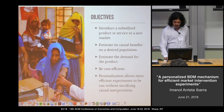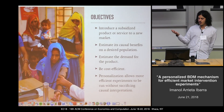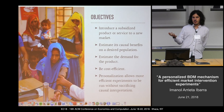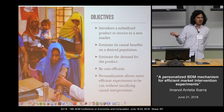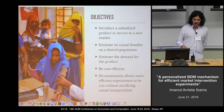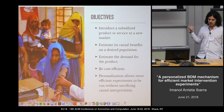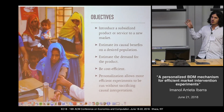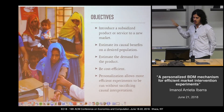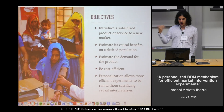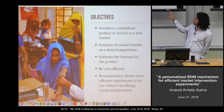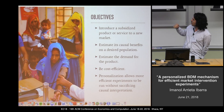Imagine that you want to introduce a subsidized product or service to a new market and you want to estimate the causal benefits for this product or service, and at the same time you want to estimate the demand for the product or service in a given population. We'll concentrate in this talk on products and services that can be introduced to low-income development settings, and we are also very interested in the experiment being cost efficient. We'll show that personalization allows more efficient experiments to be run while preserving causal interpretation.